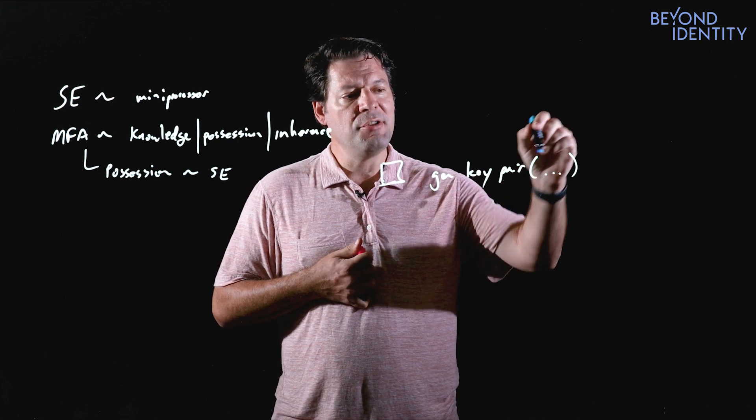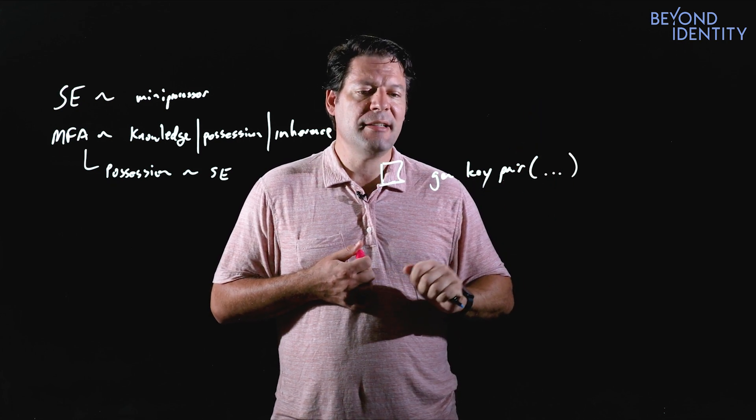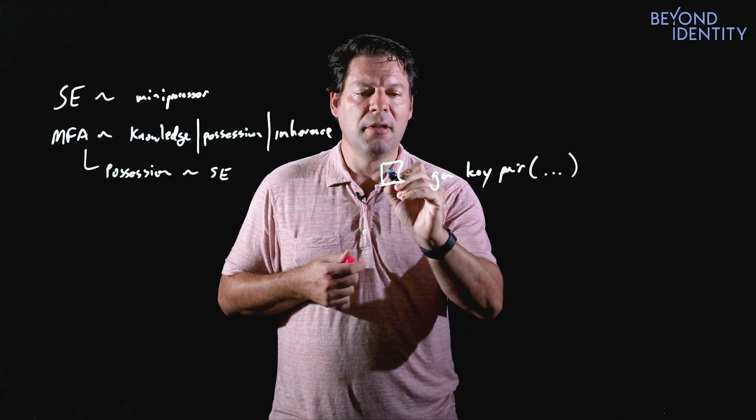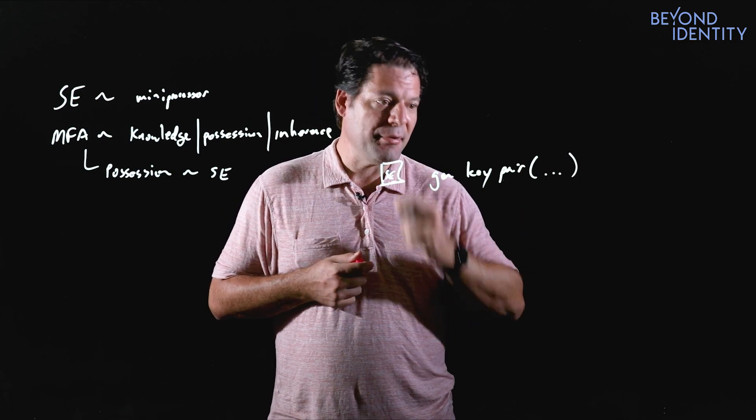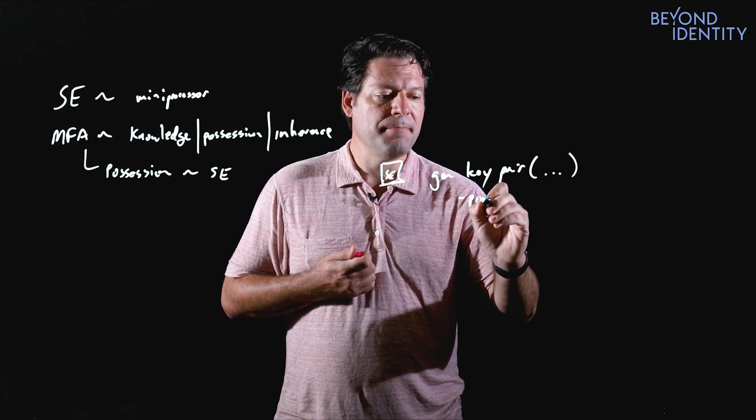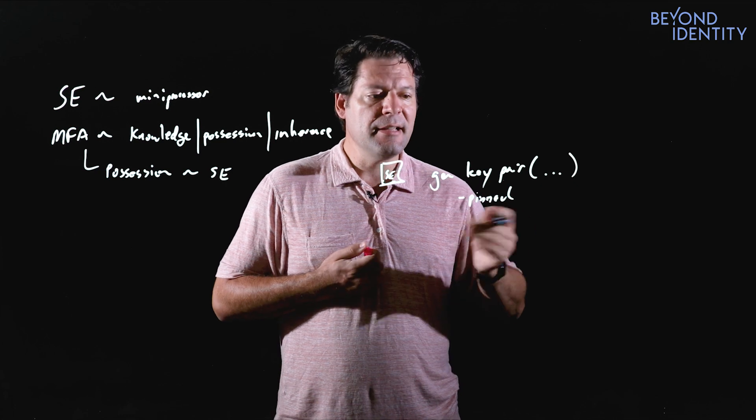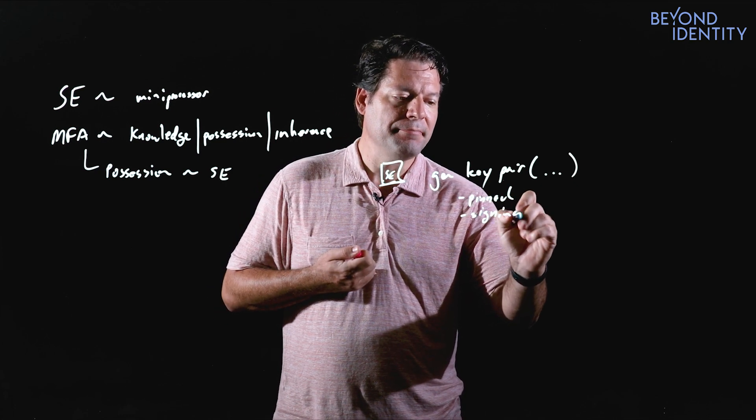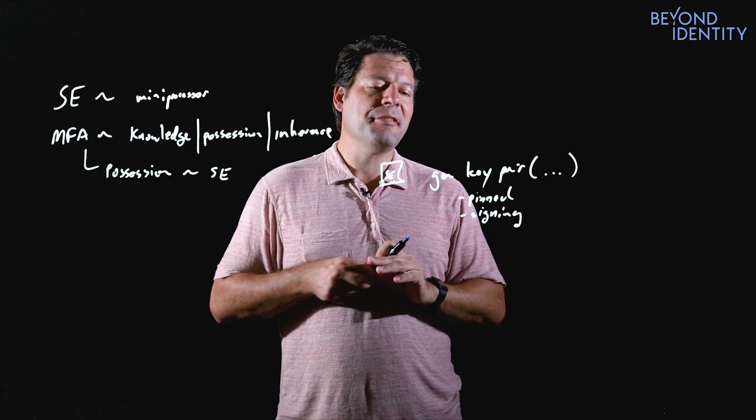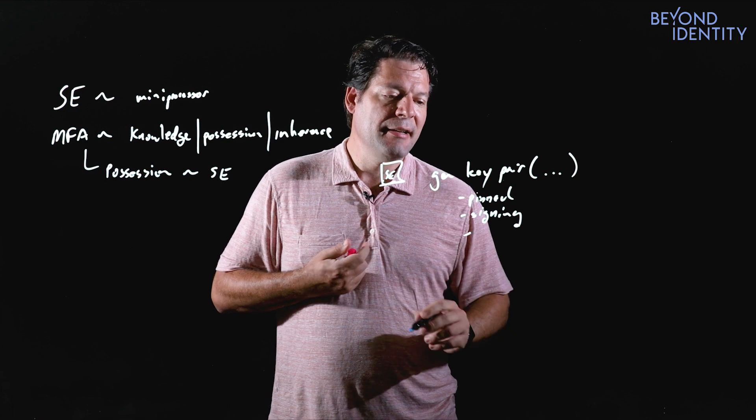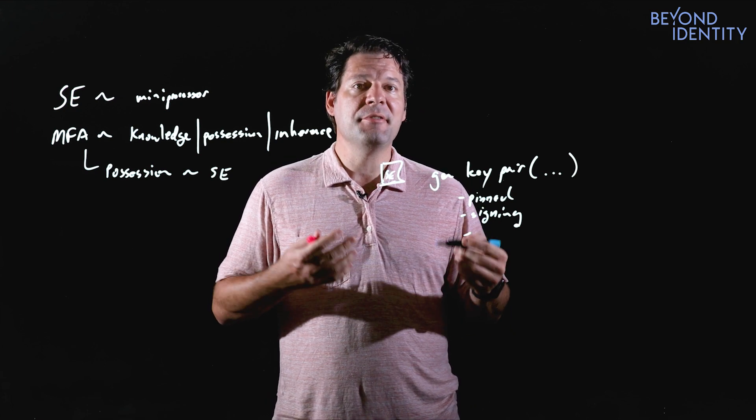Because unless you tell it when you create the key, certain keys can be copied out of the enclave just because these chips were built for lots of interesting applications. So the first thing we want to do is we want to say the key is pinned. The next thing that we actually want to do is we want to say hey, we want a signing key, and then there's other authorization policies that we can build in there.